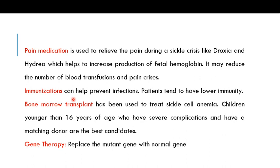Immunization is also an option because patients with sickle cell anemia have decreased immunity compared to other individuals, so immunization can help prevent infections. Bone marrow transplant has also been used to treat sickle cell anemia; children younger than 16 years of age who have severe complications and a matching donor are the best candidates.